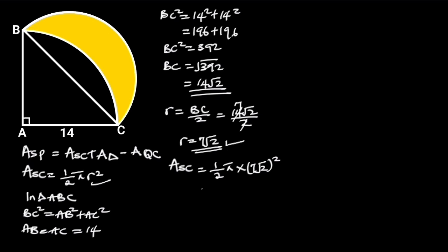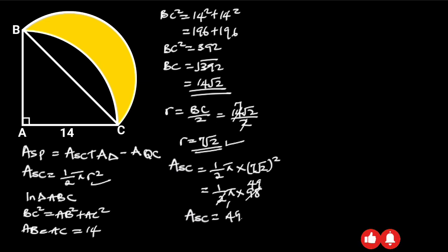It follows that the area of the semicircle is equal to 1/2 pi times 98. 98 divided by 2 is 49. Hence, the area of the semicircle is equal to 49 pi square units.